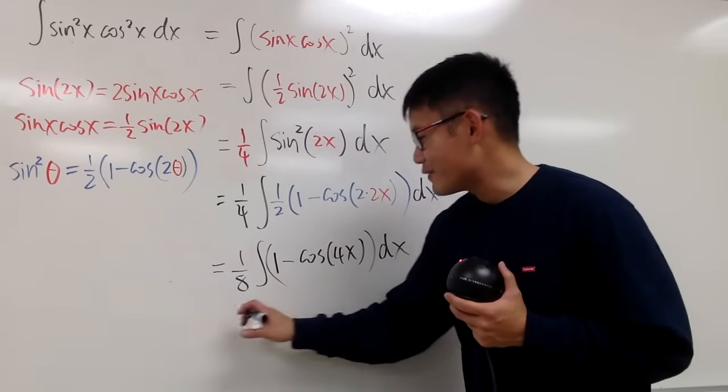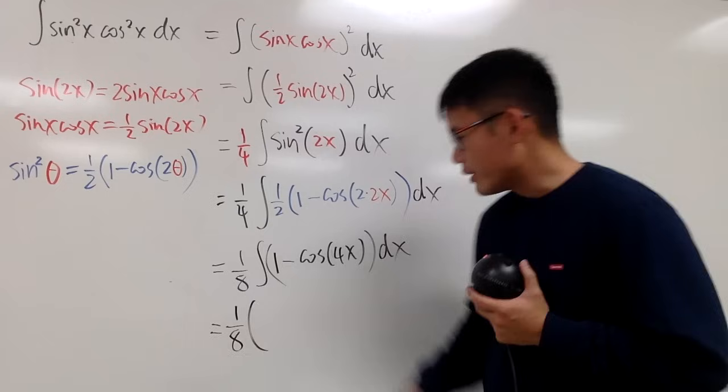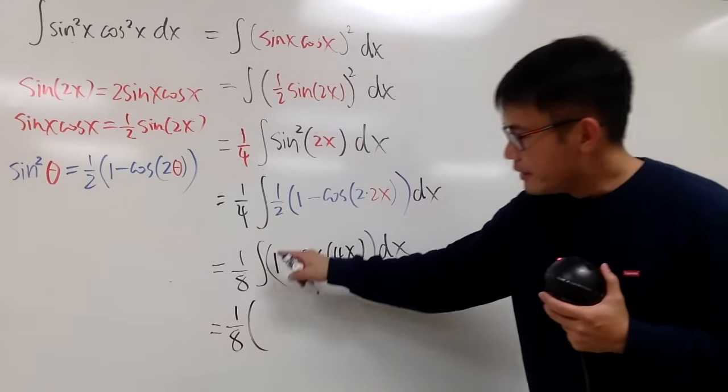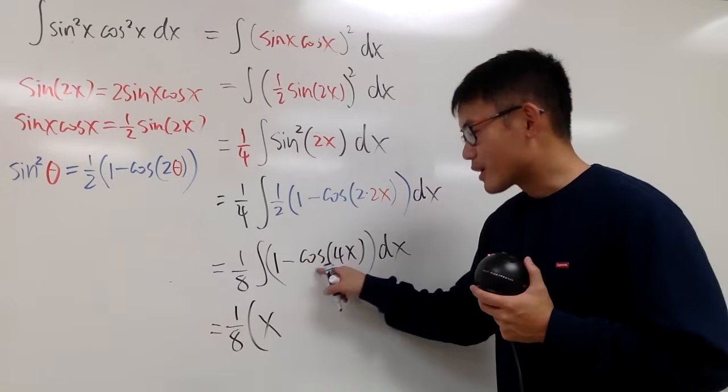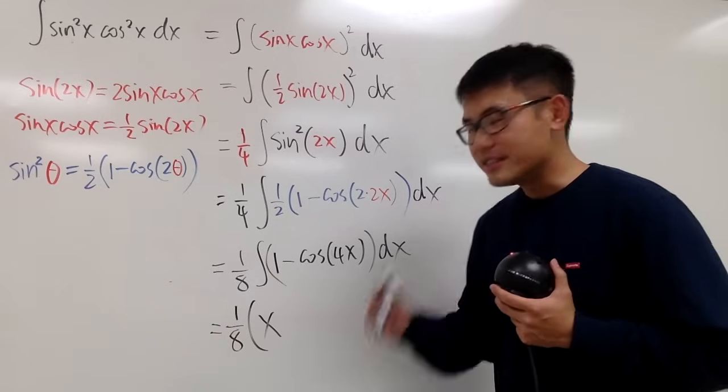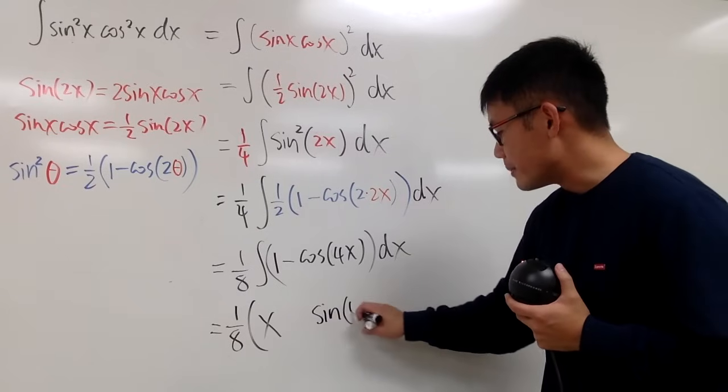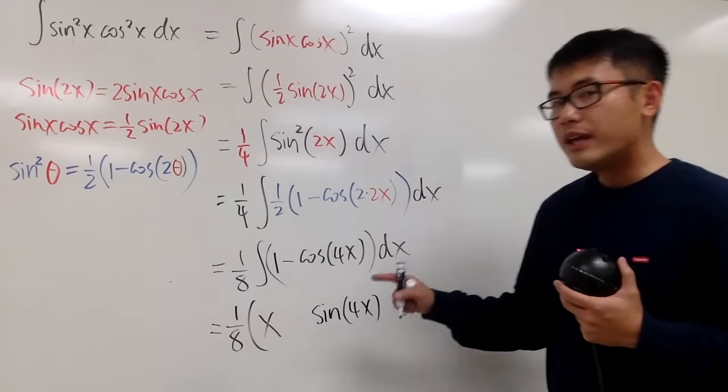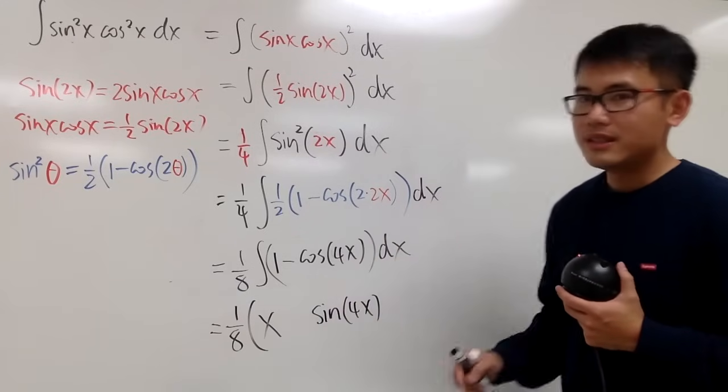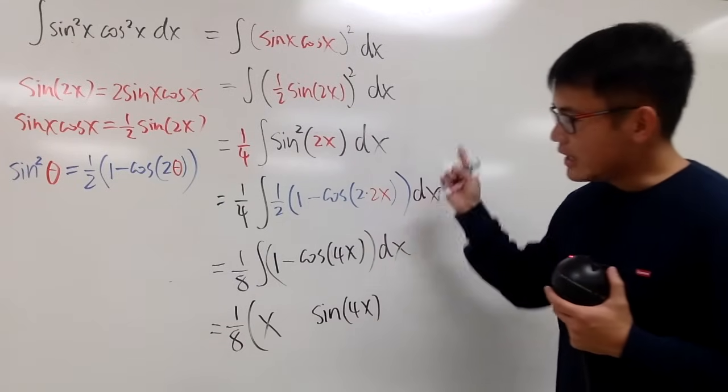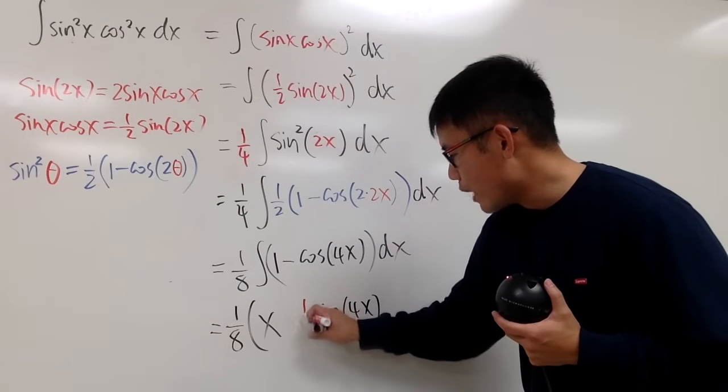And now it's time for us to actually integrate. Let me bring down the 1 over 8 to the front. And let me open the parentheses for the result of integration. To integrate 1 in the x world, we get x, okay? And then to integrate cosine, we get positive sine. So let's write that down. We will have positive sine. And the input stays the same because the input is just 4x. And remember, when you integrate, you have to check the derivative of the inside. The derivative of 4x is 4. But when you are integrating, you have to divide it by 4, right? In this case. So I will just put this down as multiplying by 1 over 4, okay?